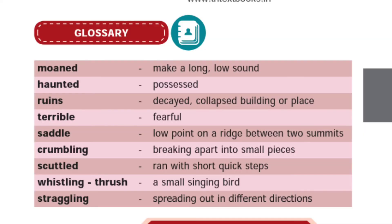Now we will see the glossary of the lesson. Turn to page number 29, Section 1. 'Wander' — make a long or low sound. 'Haunted' — possessed. 'Ruins' — decayed, collapsed building or place. 'Terrible' — fearful. 'Saddle' — low point on a ridge between two summits. 'Crumbling' — breaking apart into small pieces. 'Scuttled' — ran with short quick steps. 'Whistling thrush' — a small singing bird.